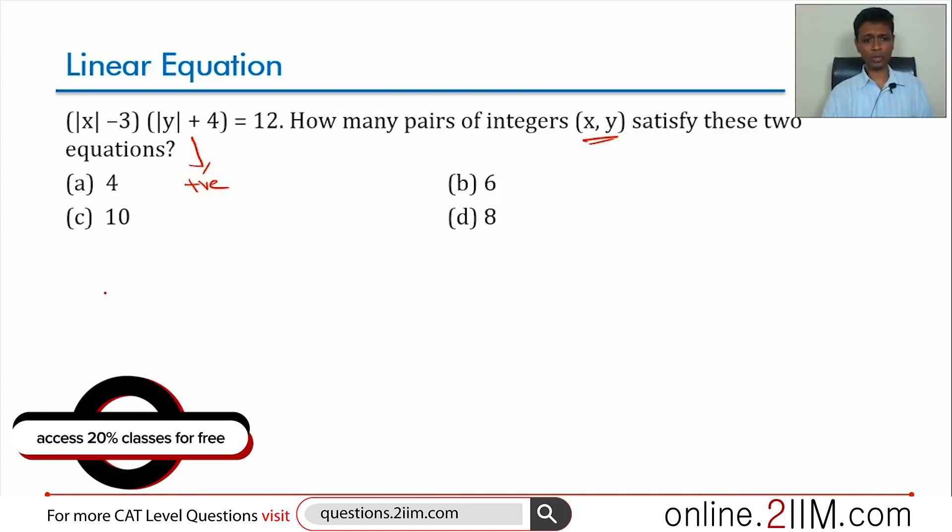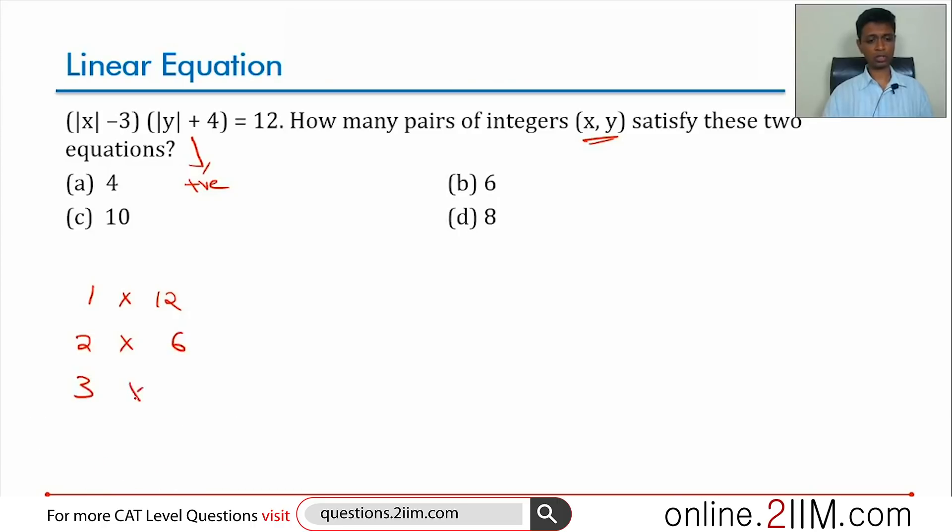Now all I'm going to do is: product of two integers is 12. It could be 1 into 12, or 2 into 6, or 3 into 4. The other way of writing this: it could be 12 into 1, 6 into 2, 4 into 3.